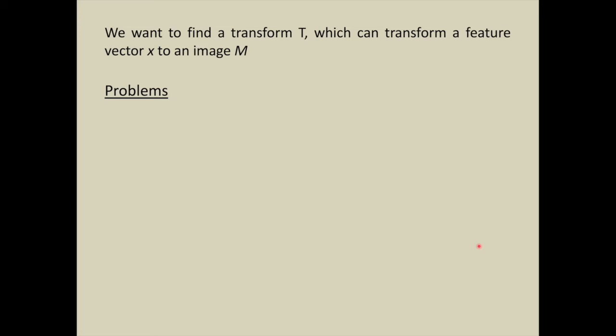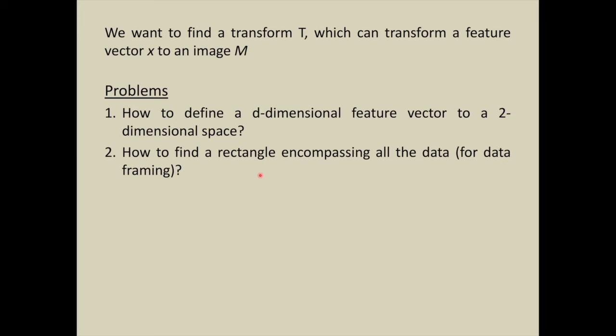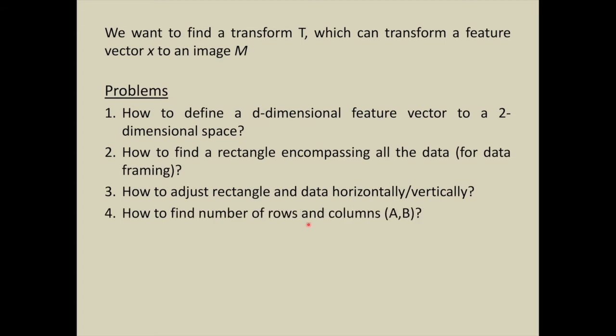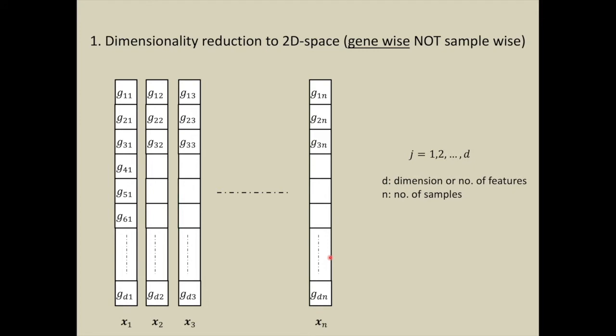What exactly we want to do is find a transform t which can transform a feature vector x to an image m. What are the problems we can envisage? How to define a d-dimensional feature vector to a two-dimensional space? How to find a rectangle encompassing all the data? How to adjust rectangle and data horizontally or vertically? How to find number of rows and columns? How to transform from Cartesian coordinates to pixel frames?